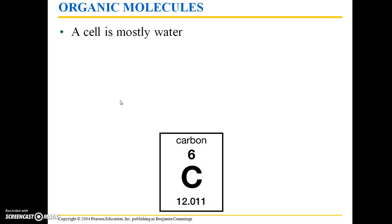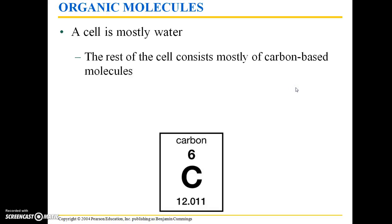We're going to talk a little bit about organic molecules first. Your cells are around 70 to 95% water, depending on which specific type of cell we're talking about, but all cells are mostly composed of water. The rest of the cell consists mostly of carbon-based molecules.